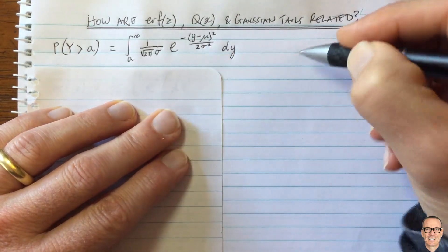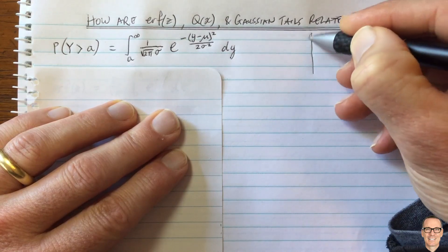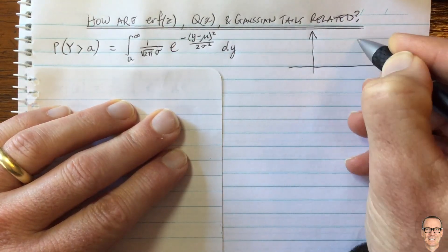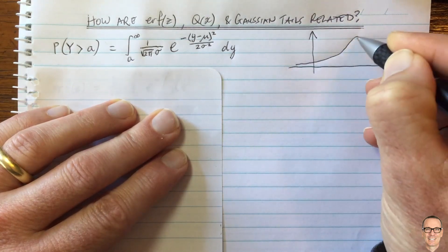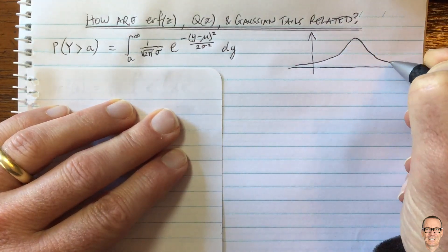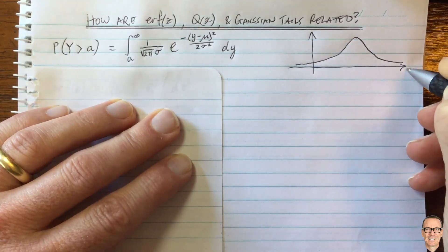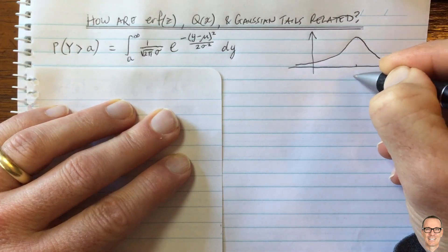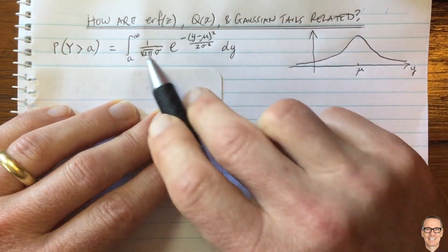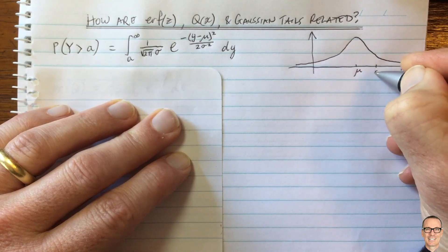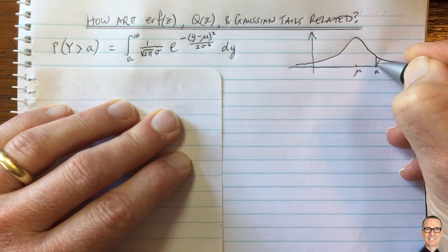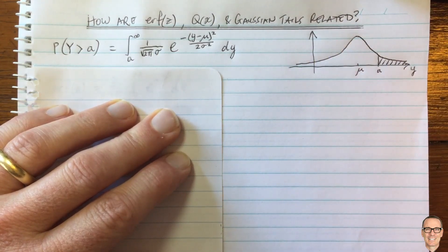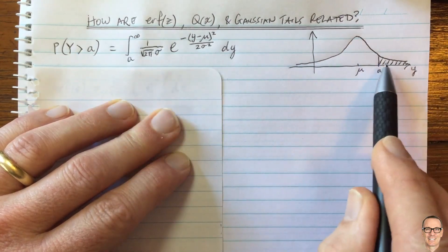Let's draw this out. Here we have a Gaussian that has a mean of mu and a variance of sigma squared. This is what the Gaussian looks like — it's a symmetric function. This is y because we're plotting for values of y, and this is the mean mu. We're integrating from a value a up to infinity, adding up this area under the probability density curve. This is what this function is — this is a Gaussian tail.